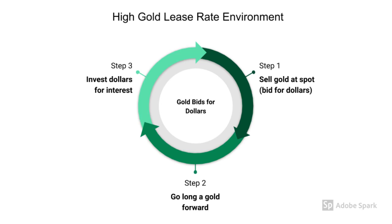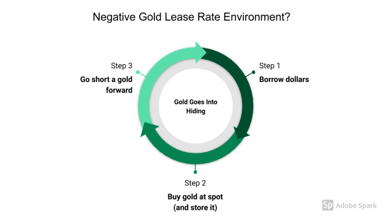So let's discuss what might happen in a negative gold lease rate environment. The owner of gold is not only not compensated for lending gold, but will be punished for doing so. The negative lease rate suggests an economic incentive to do something completely different. First, one should seek to borrow as many dollars as possible at the current dollar interest rate. The next step is to buy gold at spot and put it in a vault where storage costs are low. The third step is to go short a forward or futures contract. At the end of the term, simply wash, rinse, and repeat.